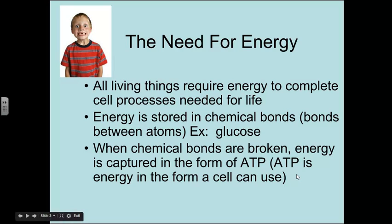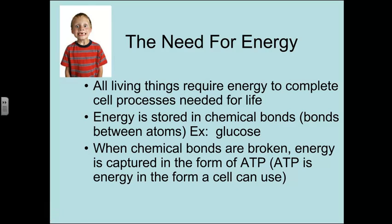Energy is stored in chemical bonds, and those are just bonds between atoms. An example of that is glucose, and we're going to use glucose a lot in this slideshow. When the chemical bonds are broken, energy is captured in the form of ATP. ATP is kind of like money in a cell — it's used for a bunch of different things in a bunch of different places in the cell.